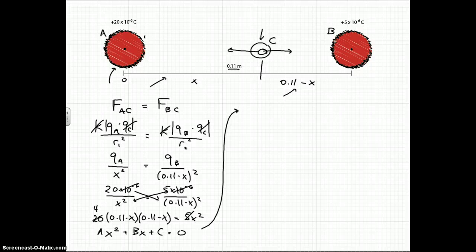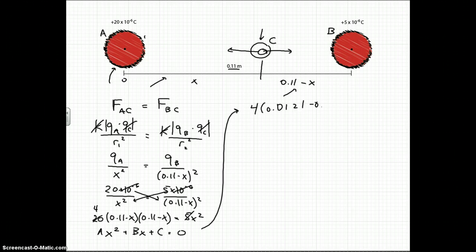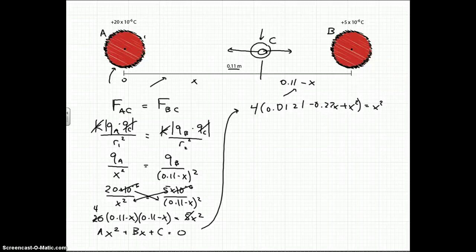So let's multiply through. So we have to start with, we're just going to write 4 times 0.0121 minus 0.22x plus x squared is equal to x squared. Sorry for the sloppy writing there. But that was just me multiplying 4 through and the x, you just use our FOIL method. If you look over here, you just multiply that by that and that by that and then this by this and that by that. And that is the FOIL method taught in algebra.